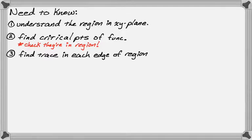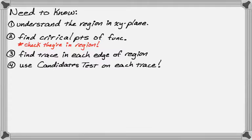After that, we're going to find the trace in each edge of the region. So the region is defined in the x, y plane, so there's like a left, right, up, down, whatever. We have to find the trace in each of those, and then we're going to use the candidates test on each of the traces. It's really just a 2D thing, so if you took Calc 1 or Calc AB or BC, you probably did this a bunch.